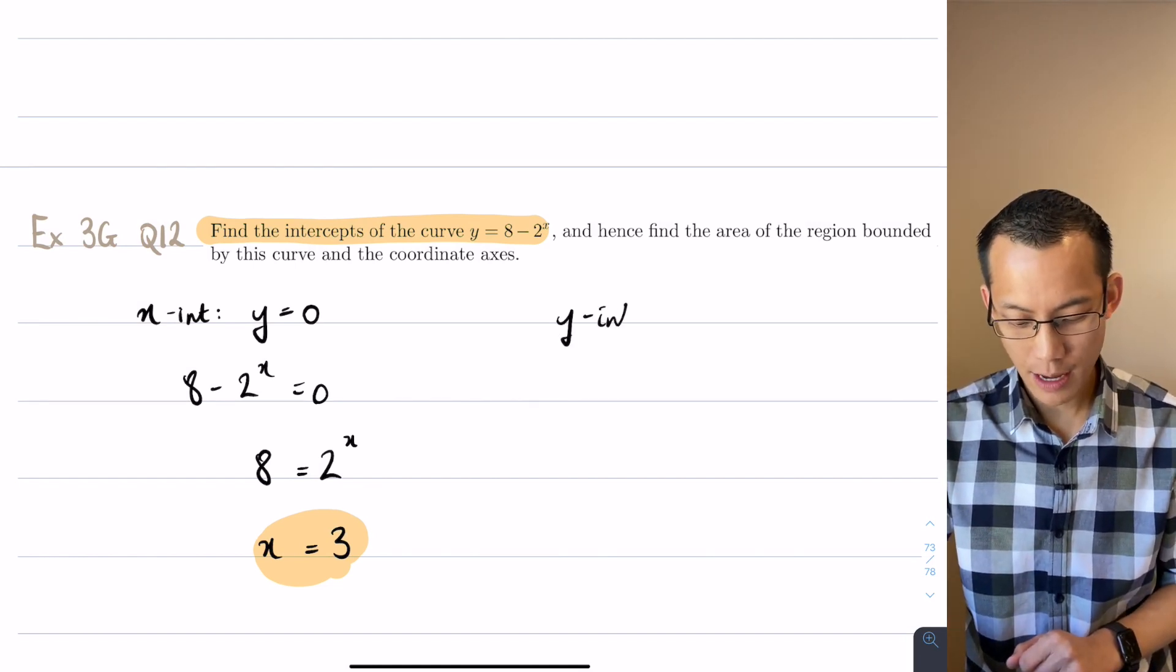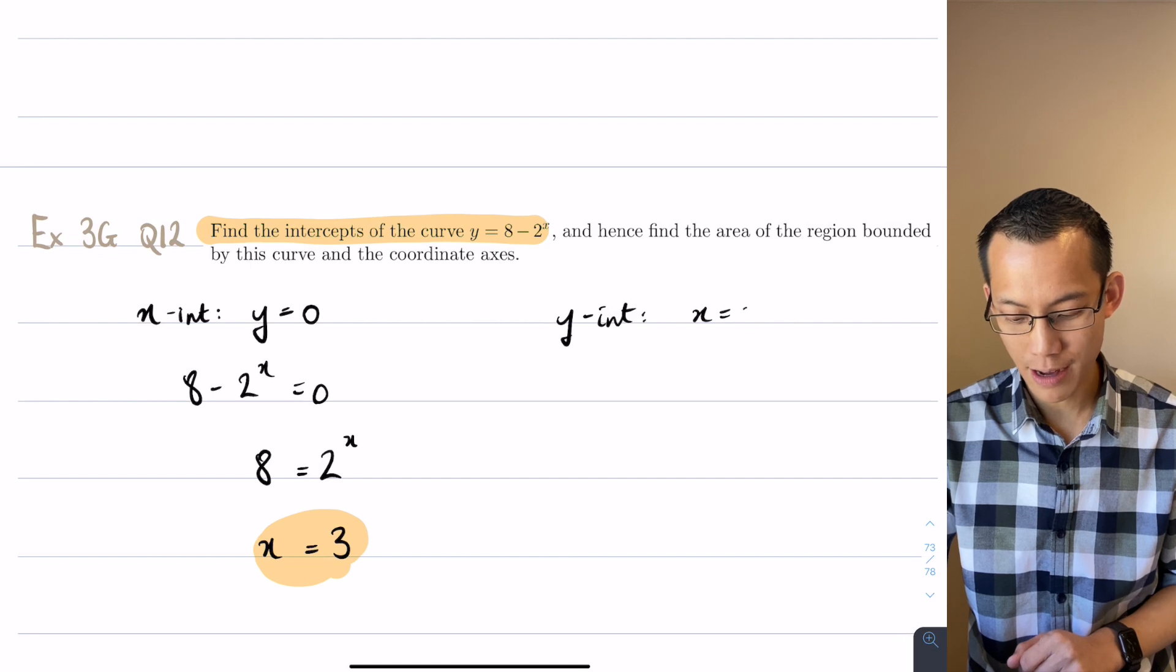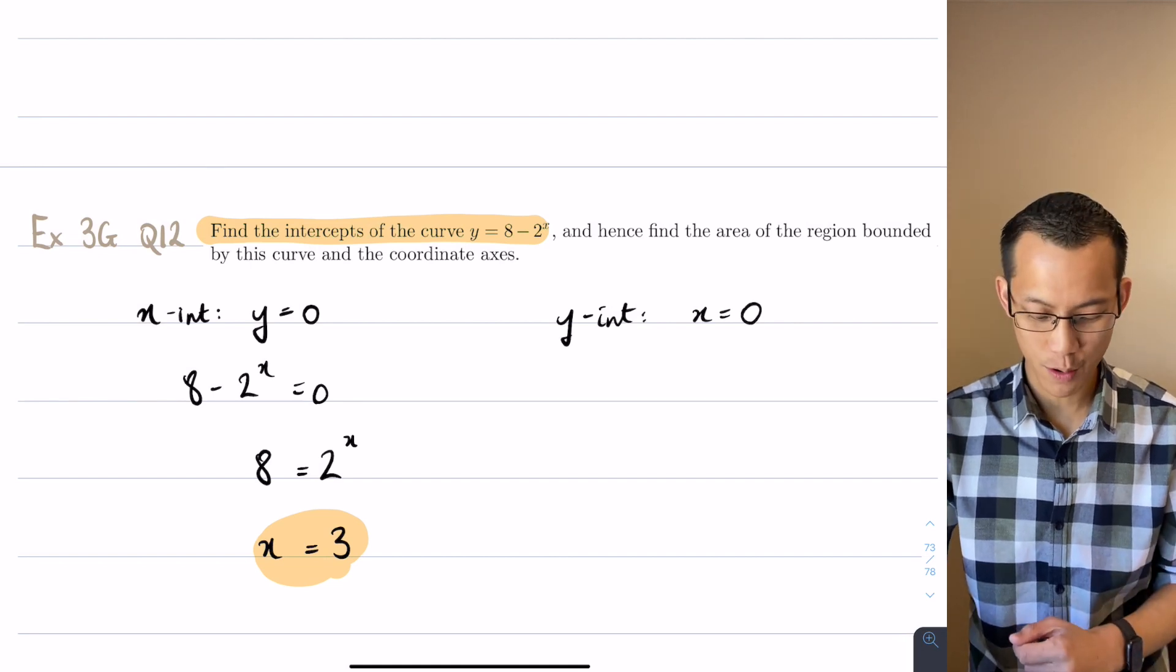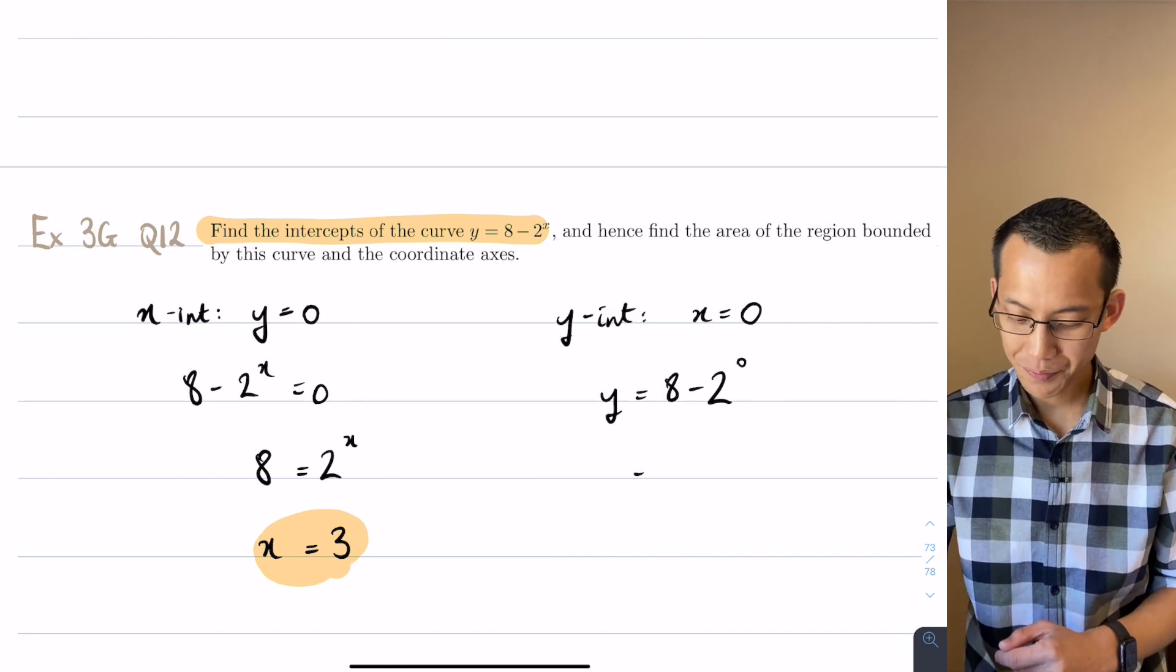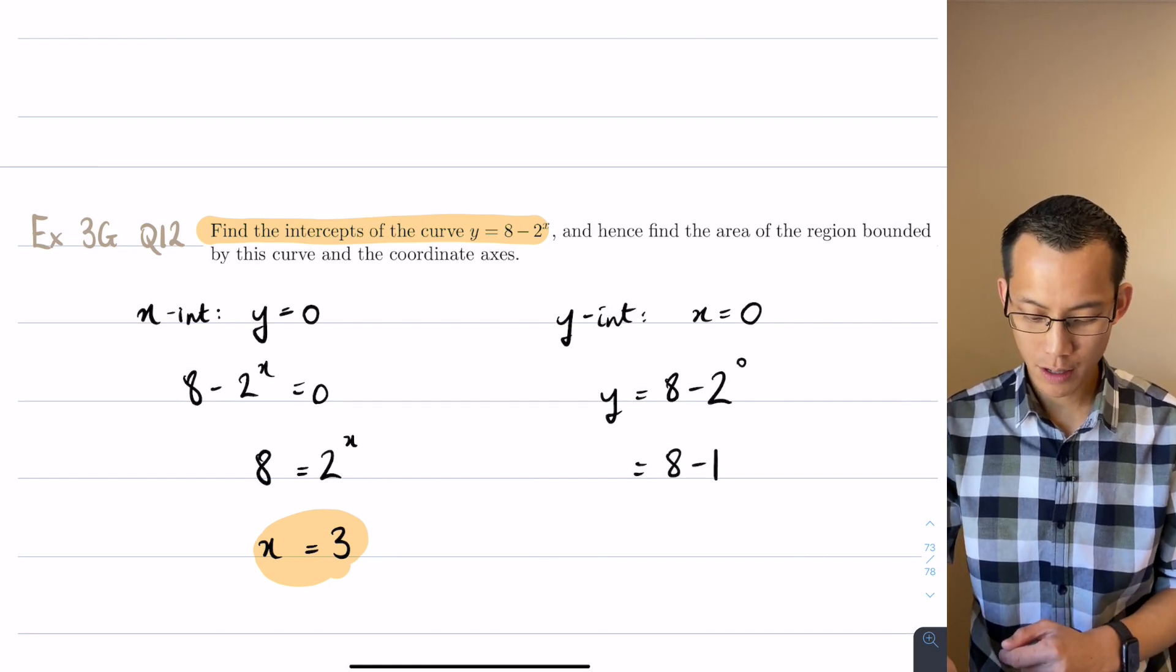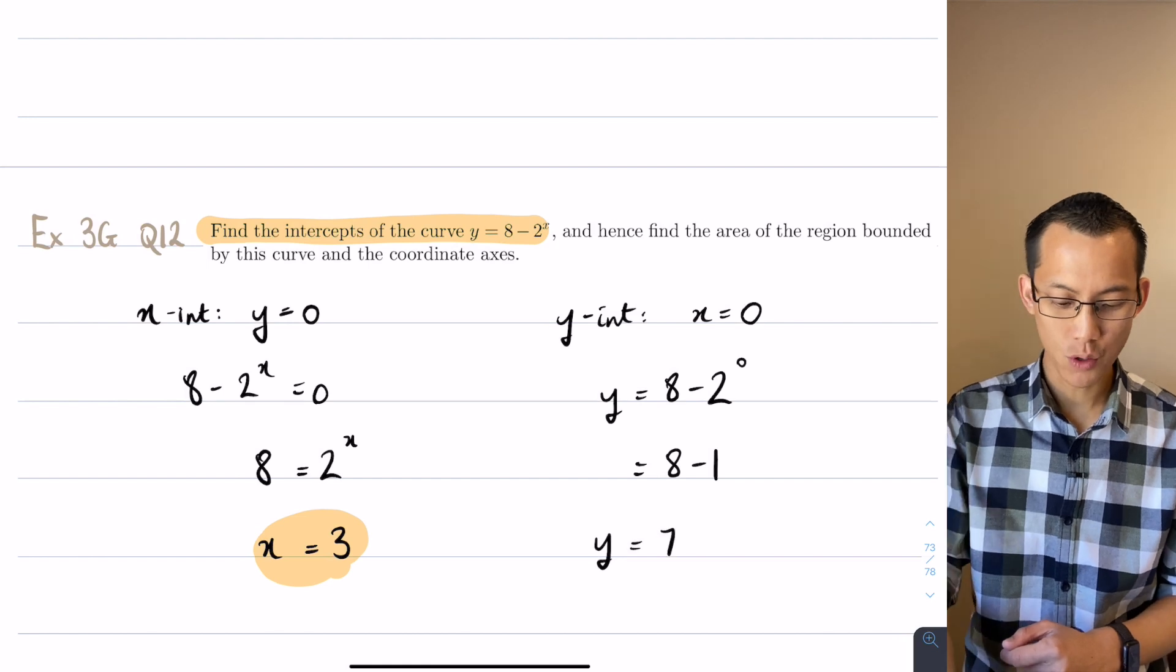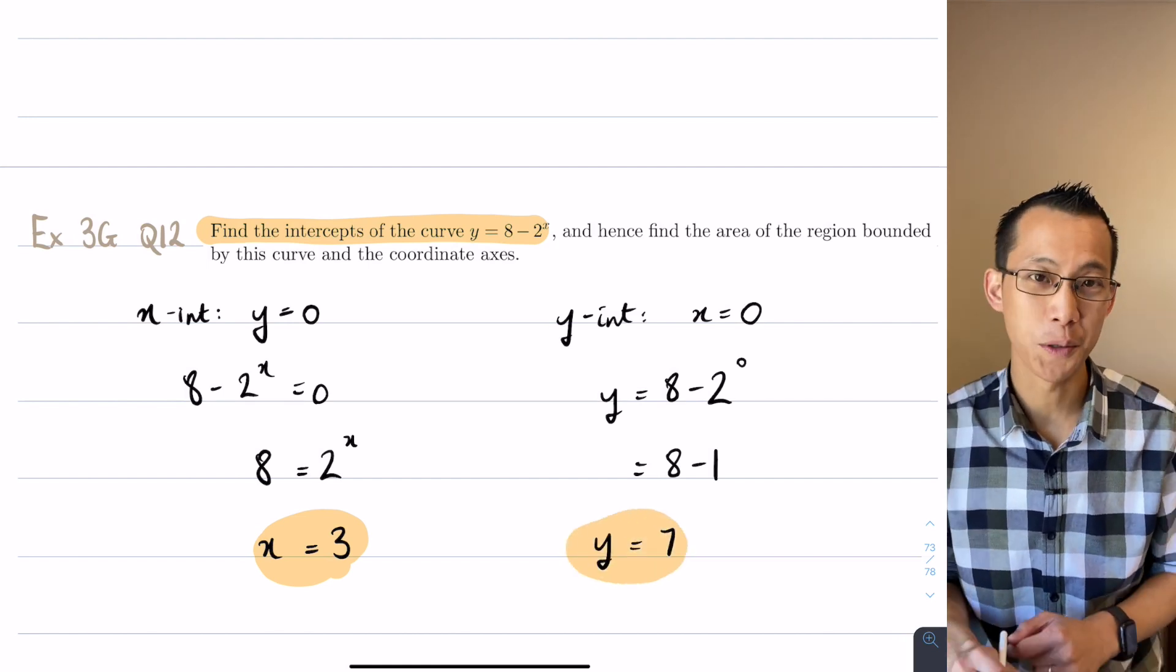I'm now going to work out my y-intercept and I do that by switching it around letting x equals 0. So y is going to be 8 minus 2 to the 0. 2 to the 0 is 1. So y is going to be equal to 7. So there's my value right there.